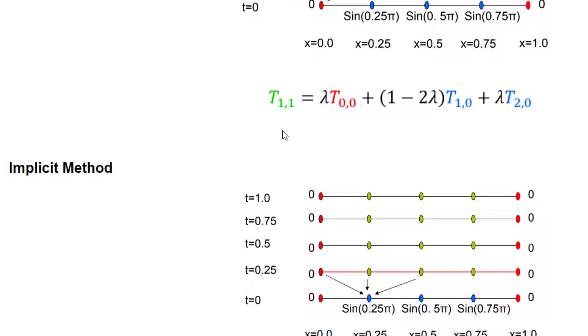Then we saw the implicit method. In the implicit method, we use these four points here to form an equation. However, in the equation, we will have two unknowns. So we cannot solve it explicitly. In this case, you have to assemble a set of equations.